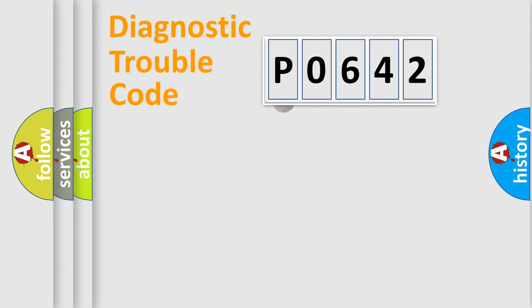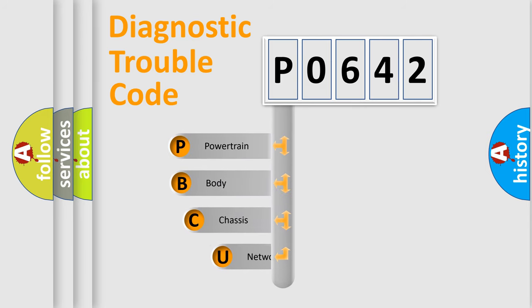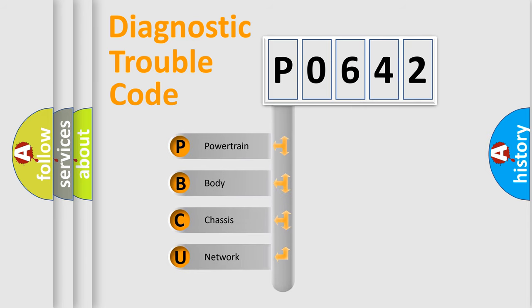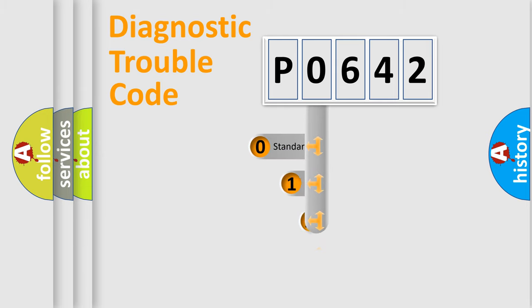First, let's look at the history of diagnostic fault code composition according to the OBD2 protocol. We divide the electric system of an automobile into four basic units: powertrain, body, chassis, and network. This distribution is defined in the first character of the code.